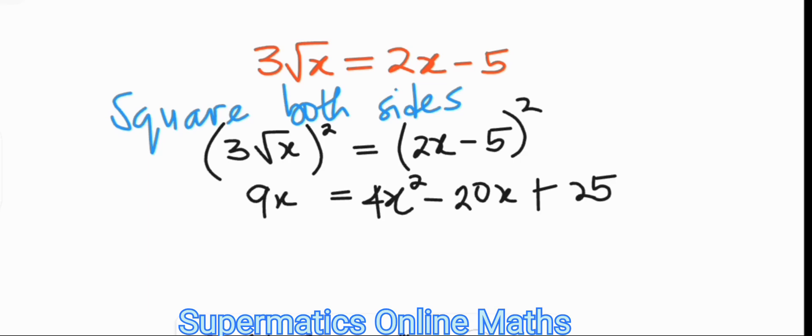At this point, we subtract 9x from both sides. On the left hand side, we will be left with 0, because 9x minus 9x equals 0. And on the right hand side,